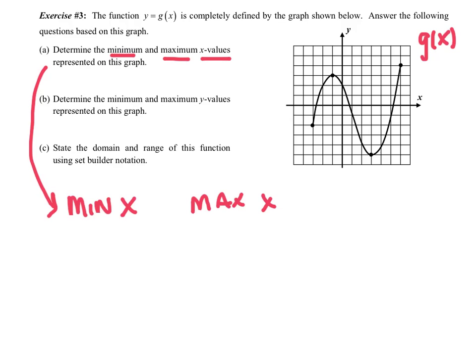Exercise 3. We're looking at the x-axis. Min is how far to the left do you go — what is this x value? I would say the farthest point to the left has an x value of negative 3, so my min x is negative 3. My max x — how far to the right do I go? That farthest point to the right is 6 away on the x-axis.